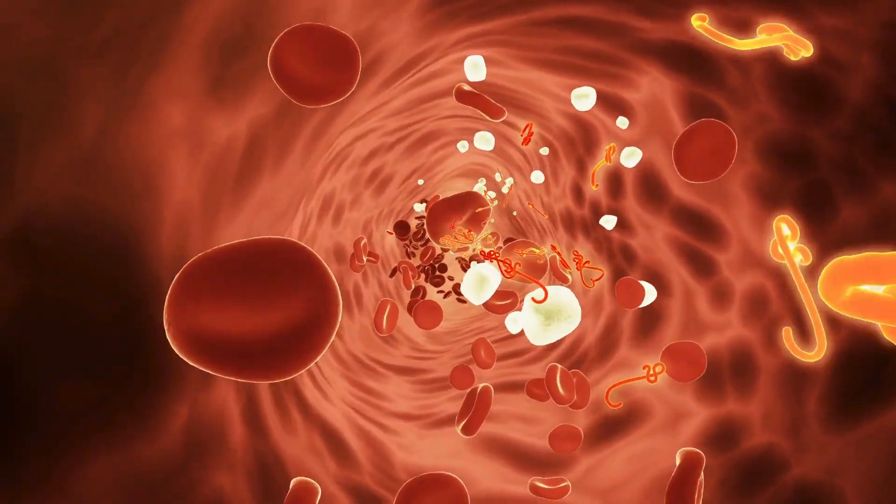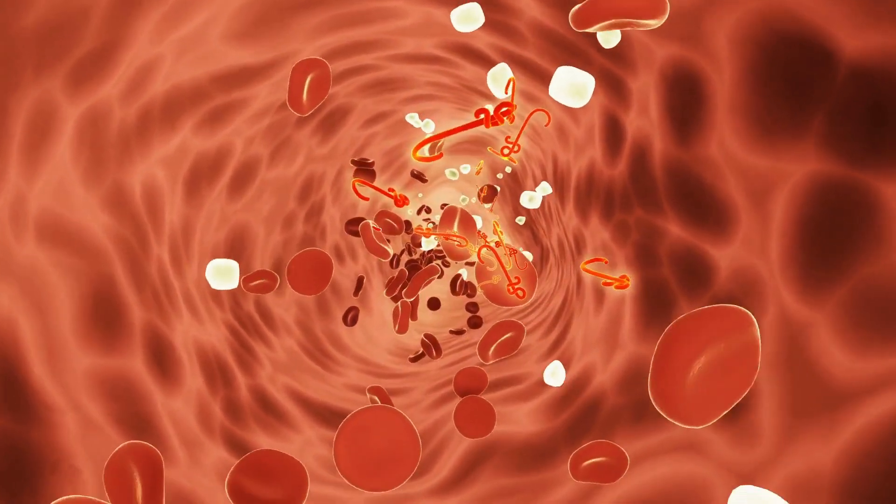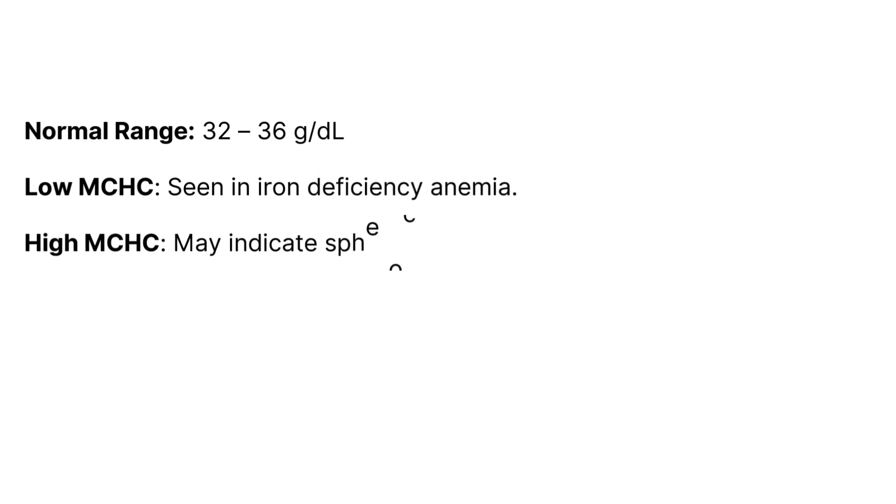3. Mean corpuscular hemoglobin concentration (MCHC): hemoglobin concentration in RBCs. Normal range: 32 to 36 grams per deciliter. Low MCHC seen in iron deficiency anemia. High MCHC may indicate spherocytosis, a rare RBC disorder.